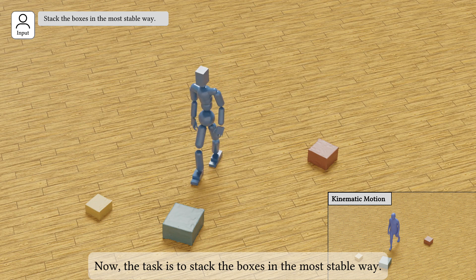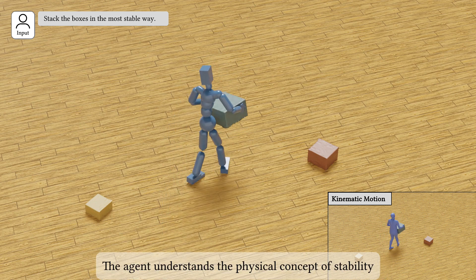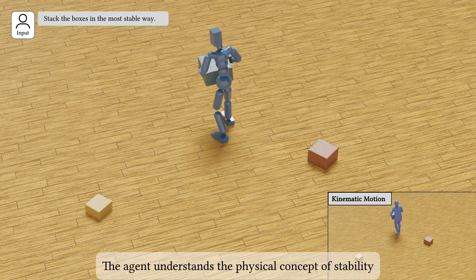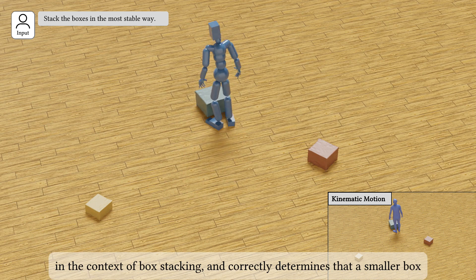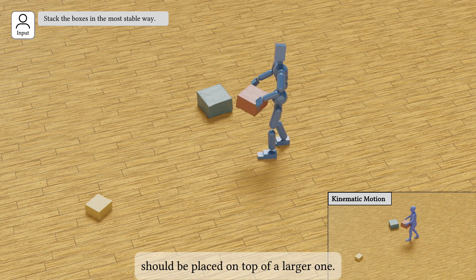Now the task is to stack the boxes in the most stable way. The agent understands the physical concept of stability in the context of box stacking and correctly determines that a smaller box should be placed on top of a larger one.